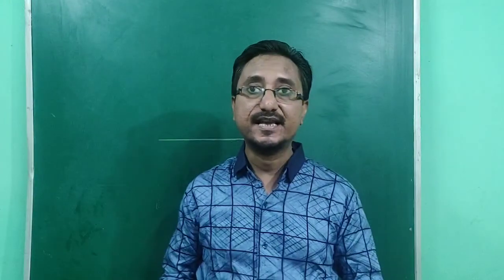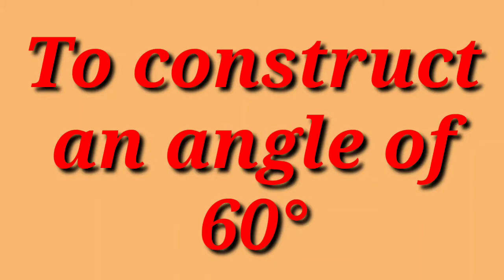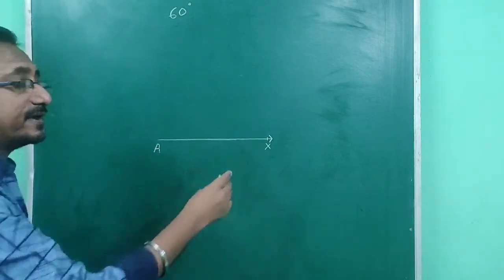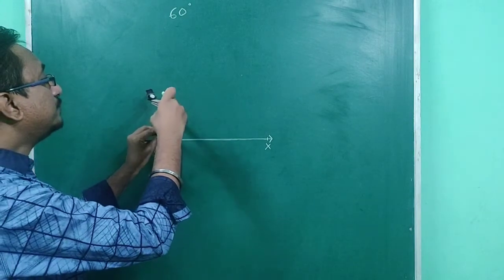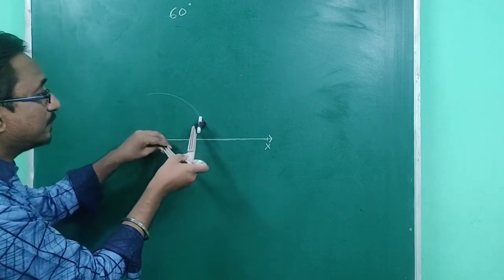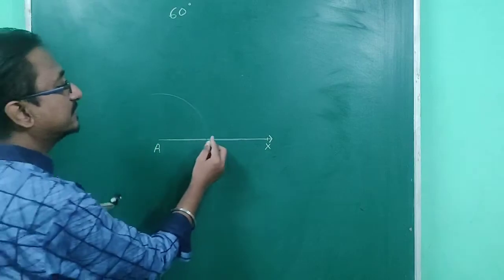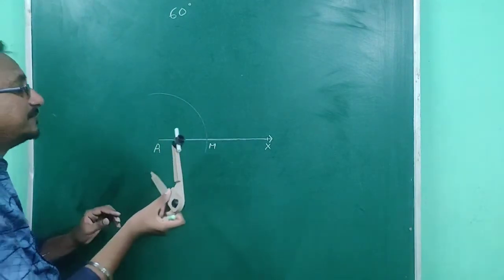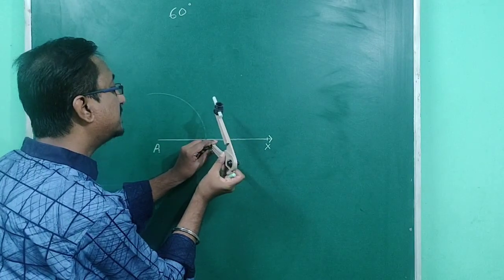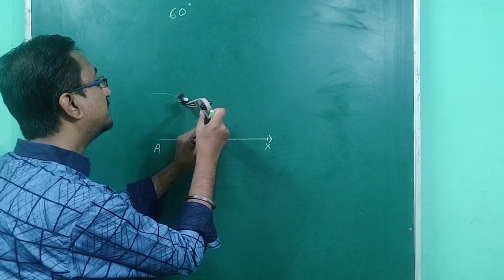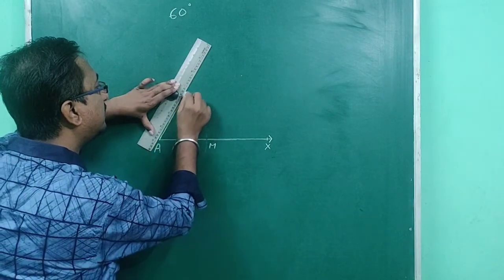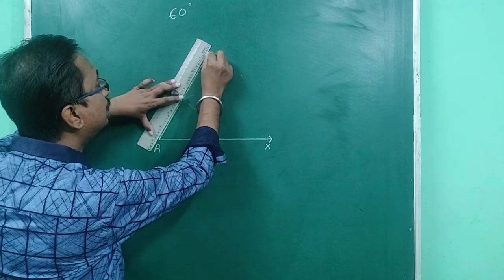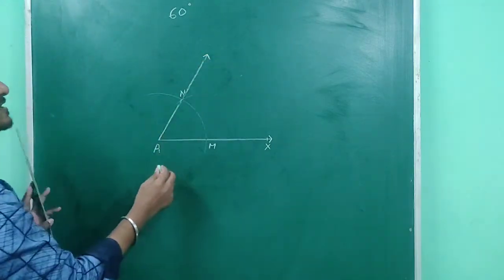Today we'll construct some of the angles and their perpendicular bisectors. Let's construct a 60 degree angle. I have drawn a ray. Taking center A and a convenient radius, I'm going to draw an arc which cuts AX at M. Again taking center M and the same radius, I'm going to cut the previous arc at M. Now I'm drawing a ray from A passing through M, and this represents a 60 degree angle — that is angle MAM represents 60 degrees.